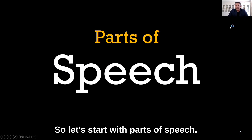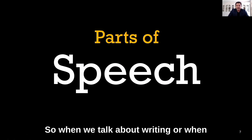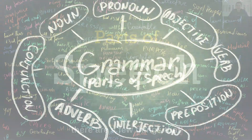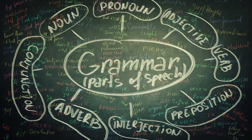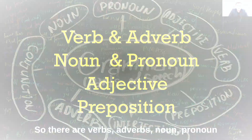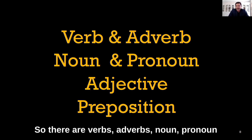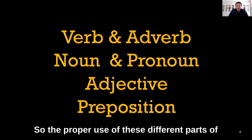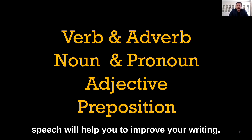Let's start with parts of speech. When we talk about writing, or English for that matter, there are a few things that help formulate a sentence. There are verbs, adverbs, nouns, pronouns, adjectives, and prepositions. The proper use of these different parts of speech will help you improve your writing.